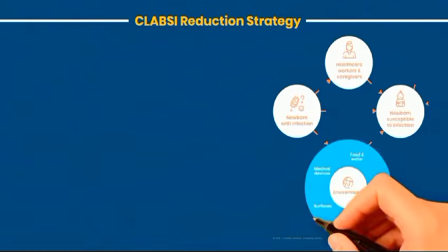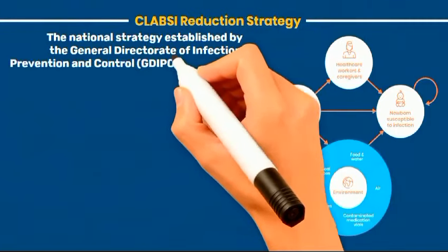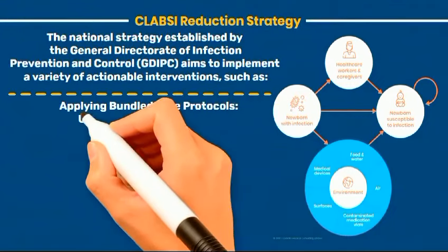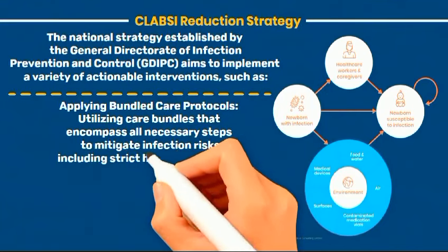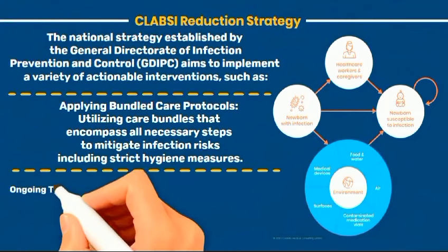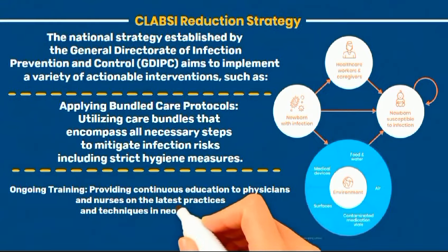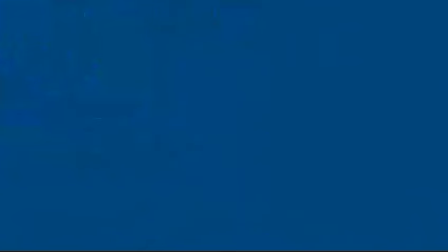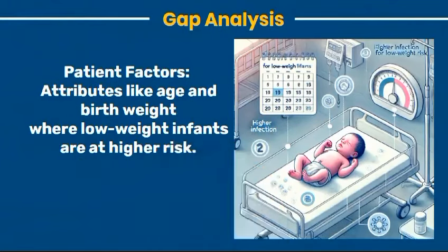The national strategy established by the General Directorate of Infection Prevention and Control (GDIPC) aims to implement a variety of actionable interventions, such as applying bundled care protocols that encompass all necessary steps to mitigate infection risks, including strict hygiene measures. Ongoing training provides continuous education to physicians and nurses on the latest practices and techniques in neonatal care, enhancing their ability to manage critical cases effectively. The analysis also focuses on patient factors such as age and birth weight, where low-weight infants are at higher risk.